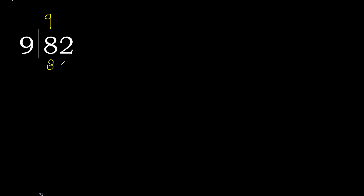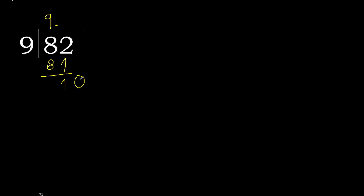9 times 9 is 81 — not greater. 82 minus 81 is 1. There is no next digit, so we complete with 0 and place a decimal point here. Now we have 10.